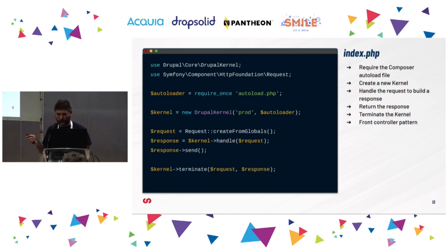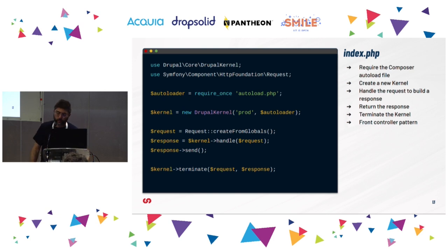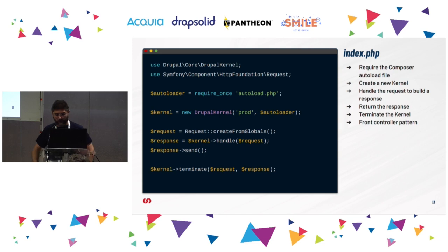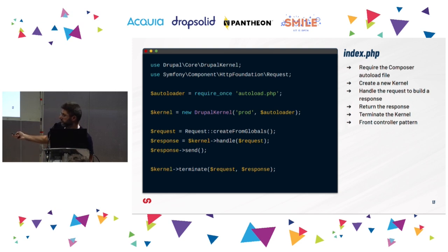What index.php does is require the Composer autoload file to load all the information from the vendor folder — modules that expose classes or objects. Then it creates a new Drupal kernel, handles the request, builds the response, returns the response, and terminates. This is called the front controller pattern, which is quite typical in web applications. All the magic happens when the request is turned into a response.